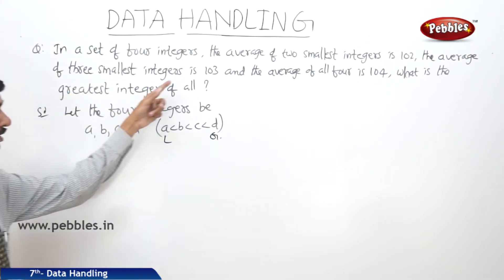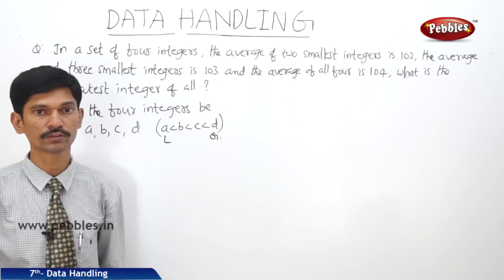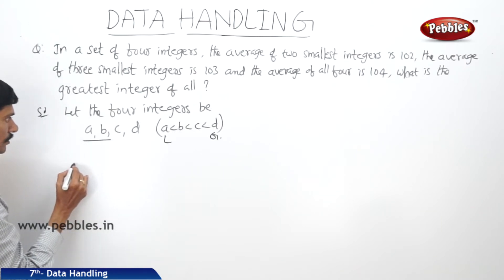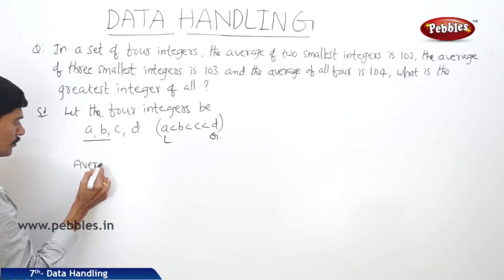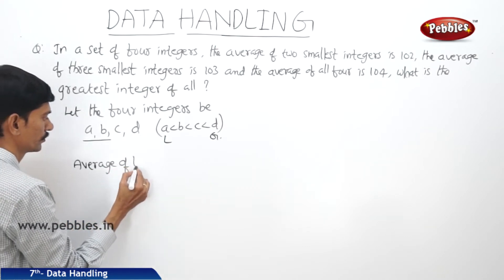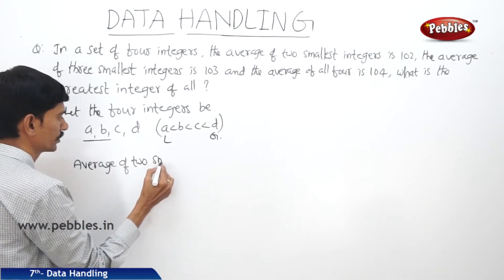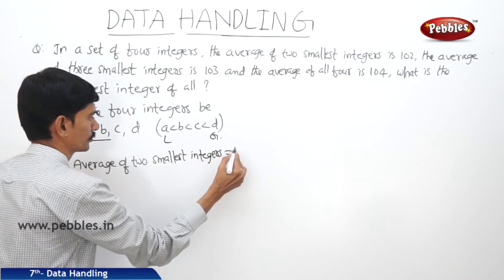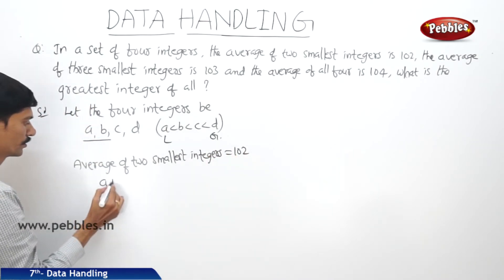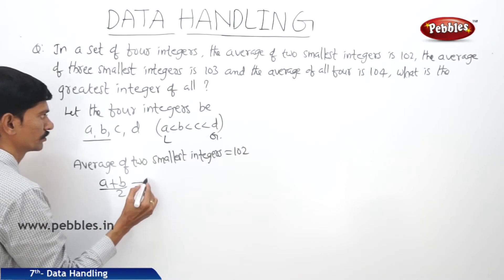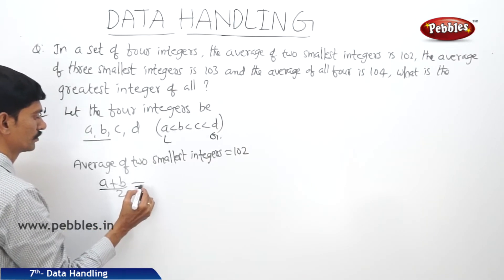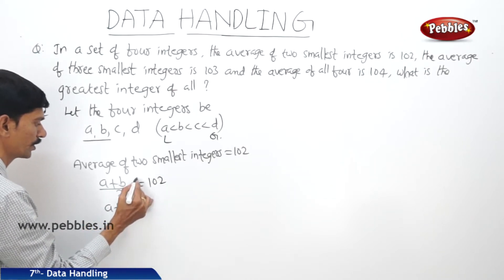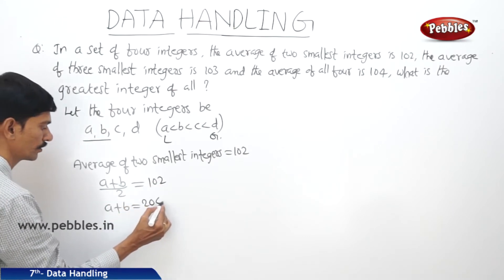According to the question, the average of the two smallest integers is 102. So the average of the two smallest integers means A plus B divided by 2 equals 102. By cross multiplication, we get A plus B equals 204.